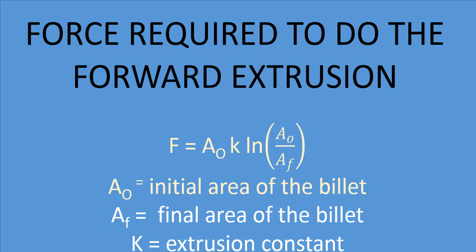So A0 is basically the area when the billet is not compressed and AF when the billet is compressed and is out from our chamber.